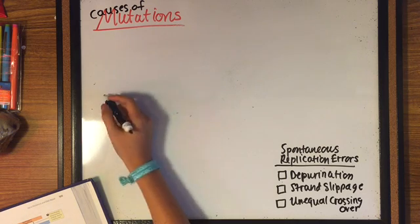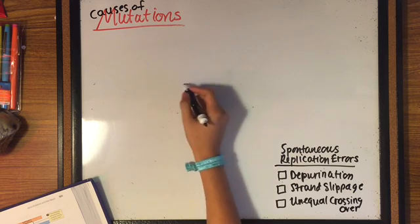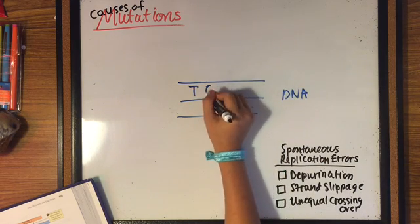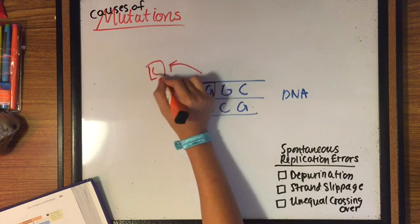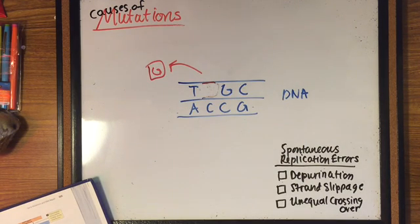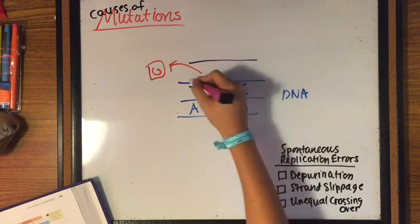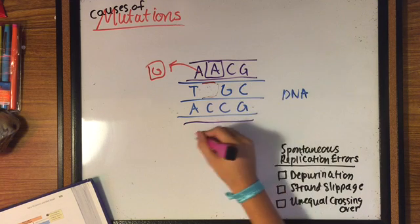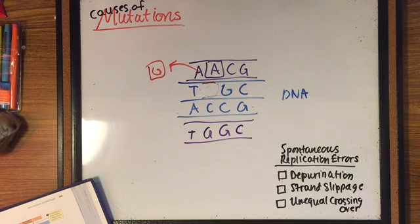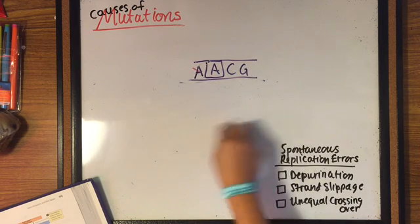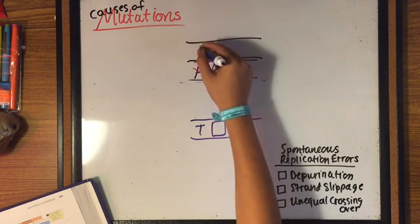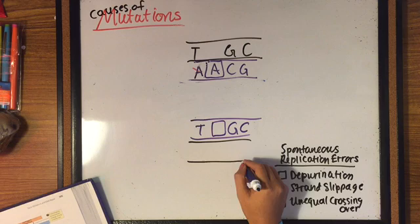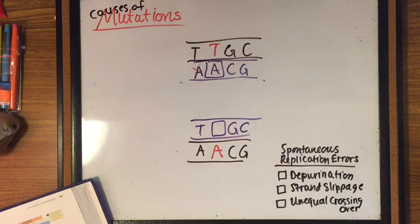Depurination is the loss of a purine base from a nucleotide that results from the covalent bond connecting the purine to the 1' carbon atom of deoxyribosugar breaks, which produces an apurinic site. This apurinic site cannot provide a template for a complementary base on the newly synthesized strand, so a nucleotide with an incorrect base, usually A, is incorporated into the newly synthesized strand. At the next round of replication, this incorrectly incorporated base will be used as a template, which will lead to a permanent mutation.